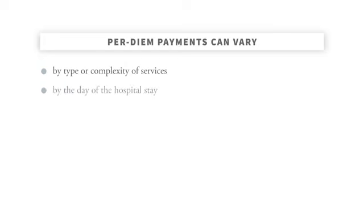A second variant would allow different per diems for different days in the hospital. For example, the first day of a stay for a patient getting surgery might be paid at a higher per diem rate than other later days, when maybe the patient is using fewer services than on the first day.